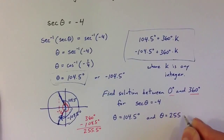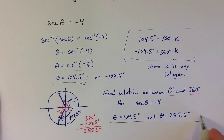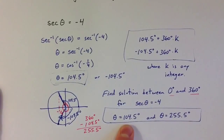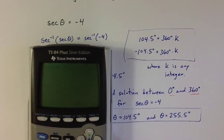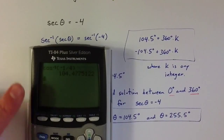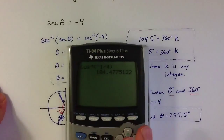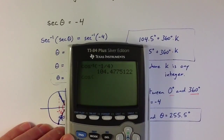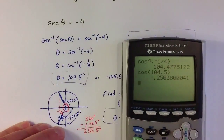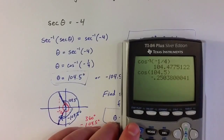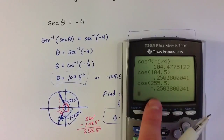Given the parameters of looking for solutions between 0 and 360 degrees, the two solutions that satisfy that are 104.5 degrees and 255.5 degrees. We can verify this: taking cosine of 104.5 gives approximately negative 1 fourth due to rounding, and cosine of 255.5 also gives that same cosine ratio, confirming both points on the unit circle.